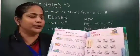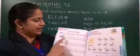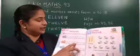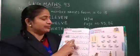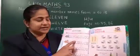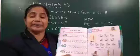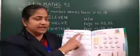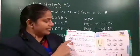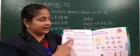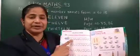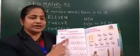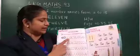Numbers from one to ten. Yeh train ka engine peh likha hai. Jo number ismein missing hai, woh aapko idhar par likhna hai. Missing number: first one. One ke baad konsa number ae ga? Two. Two aapko ismein likhna hai.